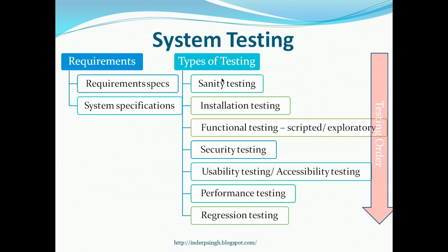Overall, the activities in system testing are: first, you create the system test plan; then you create the system test cases; create the required test data; execute the system test cases; and report defects and test progress. This is an overview of system testing. I hope you understood what system testing really is and were exposed to different important information about system testing. Thank you very much.